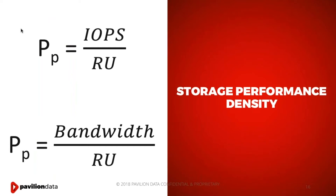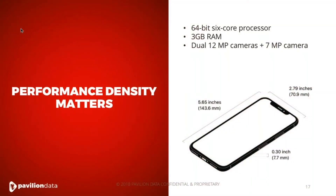In order to understand and unify these two architectures and build a more efficient data center, it is foundationally important to look at the definition of storage performance density. We all know density from physics: density is mass over volume. The lesser dense something is, the more space it occupies — and the more space it occupies, the more money you spend on space, cooling, and power. Storage performance density quantifies how much space is required for a unit of IOPS. It's defined by two distinct formulas: the number of IOPS you can get from a single rack unit, and the amount of bandwidth you can get from a single rack unit.